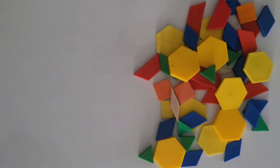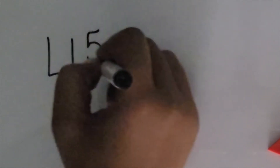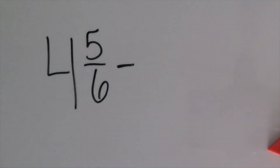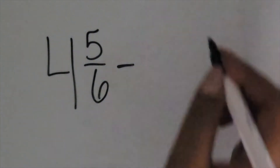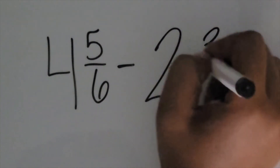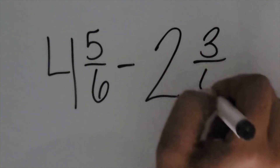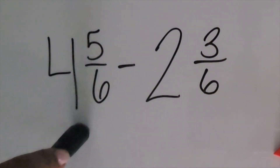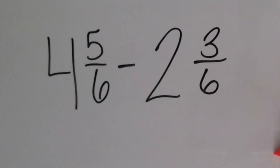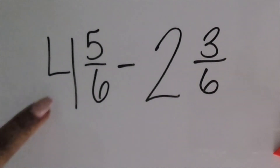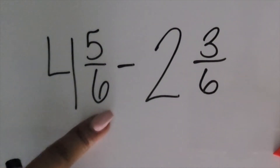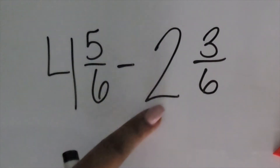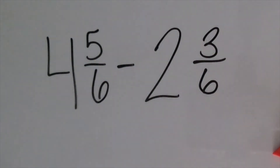Let's write out this expression: four and five-sixths minus two and three-sixths. Once students have read through the problem and realize they're subtracting, they need to figure out the difference between these two mixed numbers. How can that be done with pattern blocks?